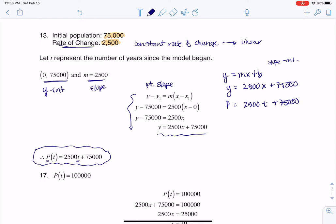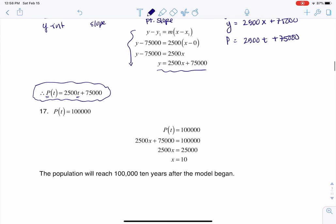All right, and then number 17 says, when will the output reach 100,000? So they're just trying to say, if you start with 75,000 folks and you're growing at 2,500 folks a year, when is your population going to be 100,000? So you see me in number 17 setting my function equal to 100,000. So when is the population equal to 100,000?